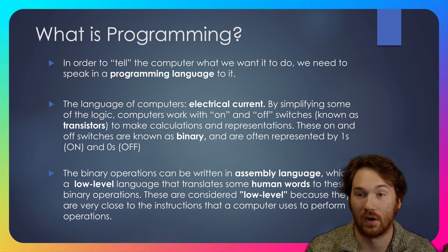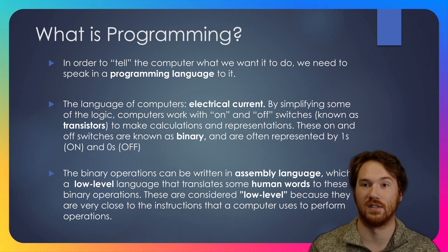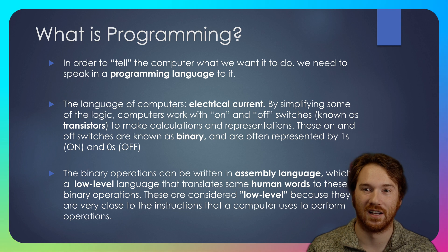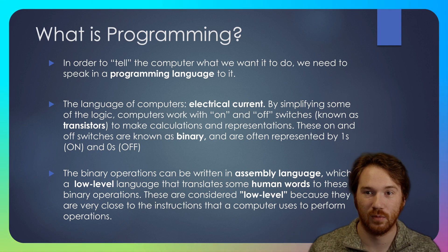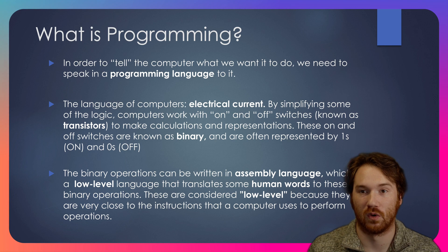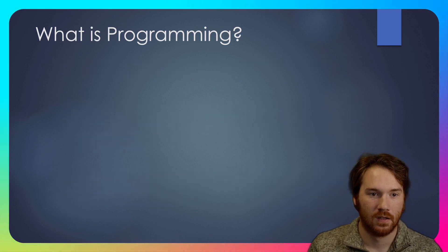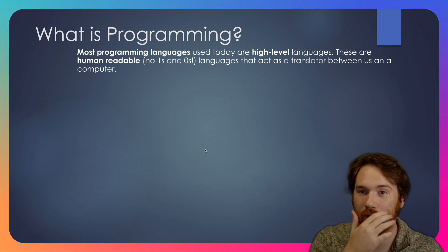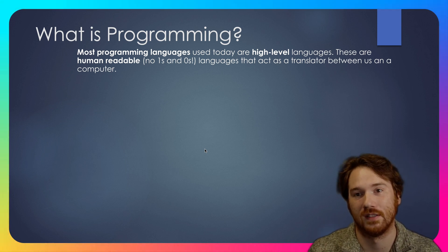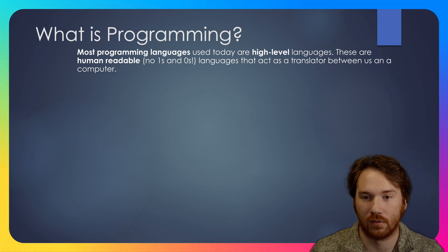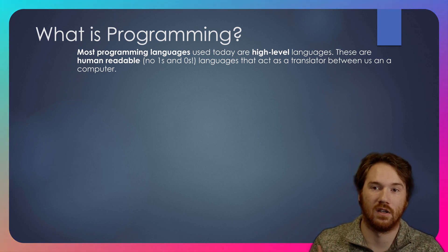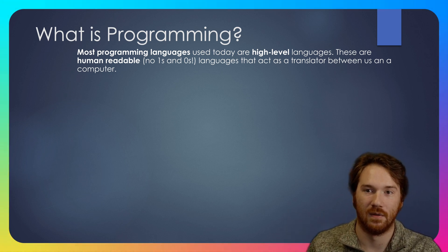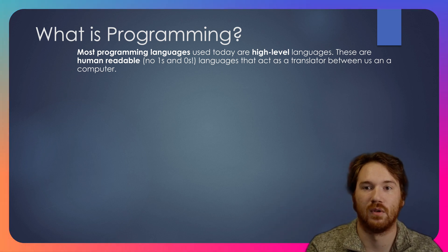Before I started programming, I used to think programming was literally about typing ones and zeros into a computer, which was a pretty terrifying concept. But luckily for all of us, it isn't. Programming is actually using human-written language. Assembly language uses human words to describe operations, but nobody really writes in assembly language anymore. Most programming languages used today are high-level languages — they're human readable, no zeros and ones — and they act like a translator between us and a computer. I describe what I want in human language, and that gets translated into binary that the computer can understand.